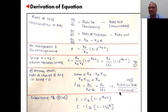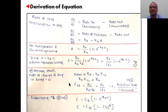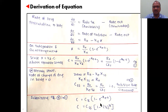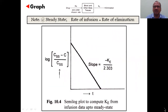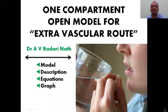At steady state, zero = R₀ − ke × Xss, so Css = R₀ / (ke × Vd) = R₀ / Clearance. This is very important: if you know the infusion rate and drug clearance, you can easily find Css. Substituting Css back into the first equation gives C = Css × (1 − e^(−ke·t)). These are the final equations. Derivation is generally not asked in exams but you can write it if required.